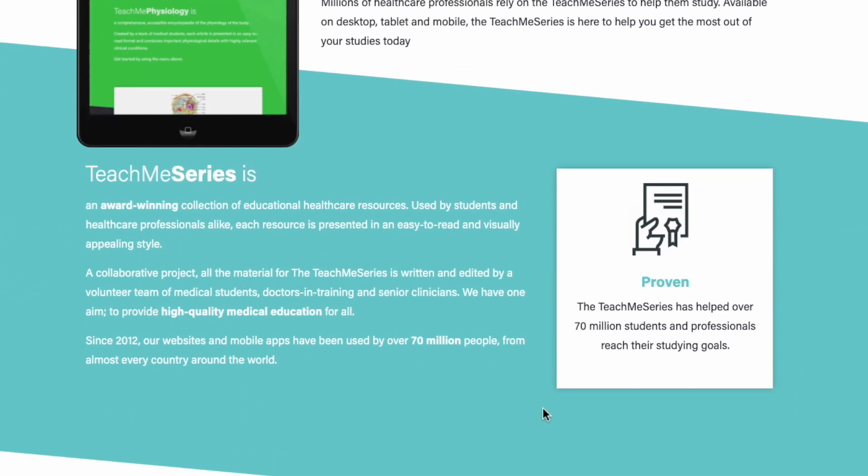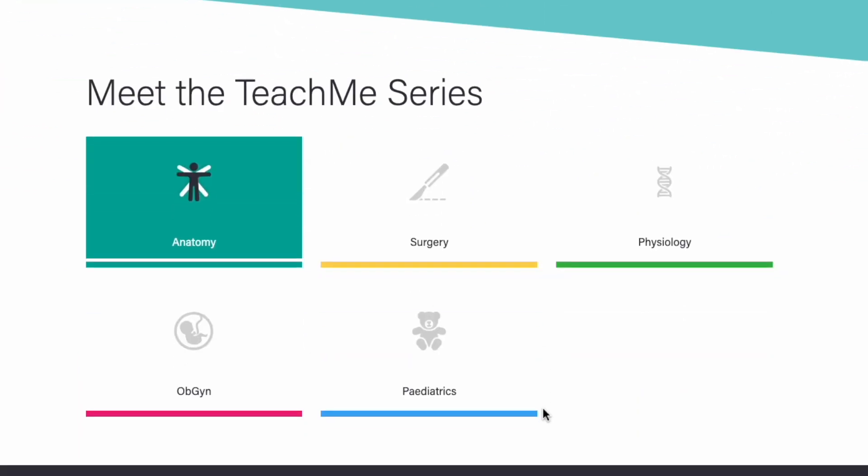The next resource I recommend is the Teach Me Series. This is a website with articles on different topics — they don't cover everything, but for clinical medicine they cover obs and gynae, surgery, and paediatrics. They also have a pre-clinical section; I used Teach Me Anatomy back in the day and discovered they have Teach Me Physiology too. Essentially, they're short, well-written, easy-to-read articles that explain concepts at the level you need as a medical student. In my fifth year — the specialties year — I used it for obs and gynae and found it really helpful; it was actually how I learned most of that content alongside my medical school lectures.